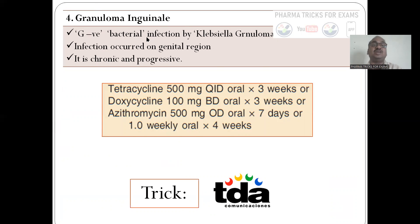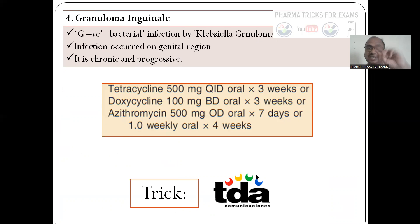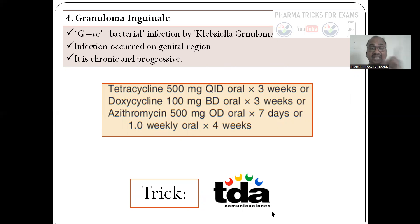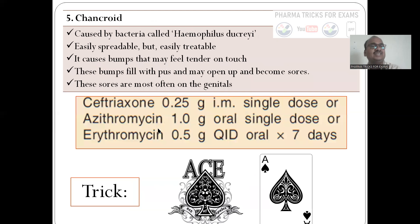Granuloma inguinale is caused by Klebsiella granulomatis, a gram-negative bacteria. Infection occurs in the genital region and is chronic and progressive. The mnemonic is TDEA — Tetracycline (T), Doxycycline (D), Erythromycin (E), Azithromycin (A). Remember it as a communication company: TDEA — because granuloma granules are associated with this sexually transmitted disease.